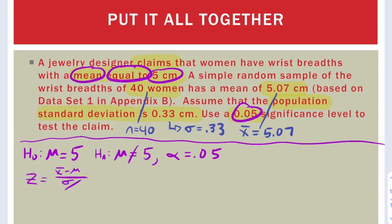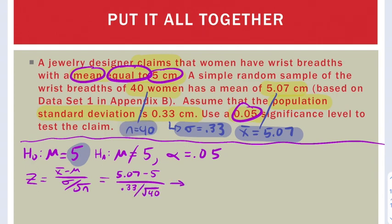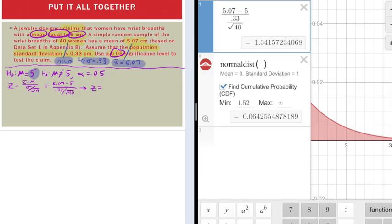So I'm going to write out my formula. My x-bar is 5.07. My mu for my hypotheses is 5. My standard deviation is 0.33. And my n is 40. And now we're ready to put this in the calculator, and I get a z of 1.34.